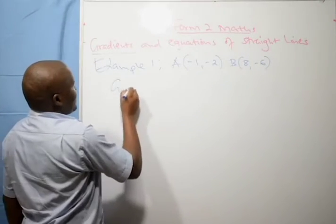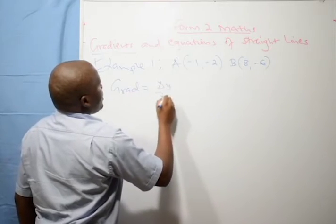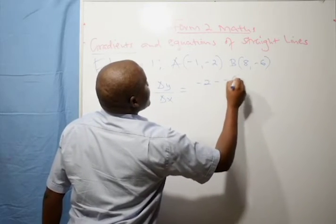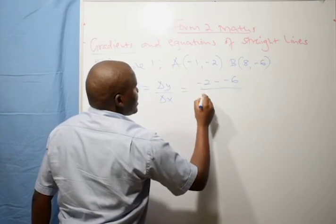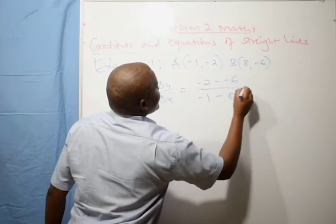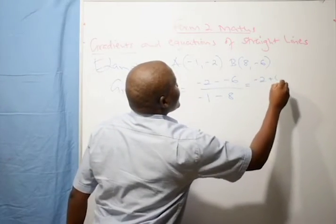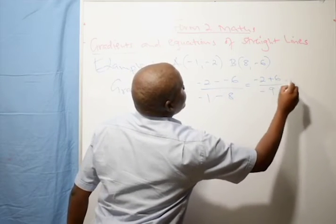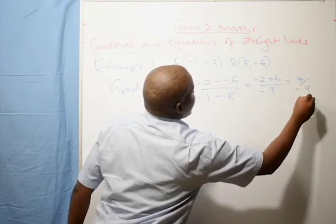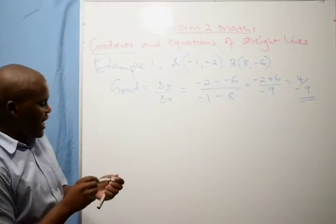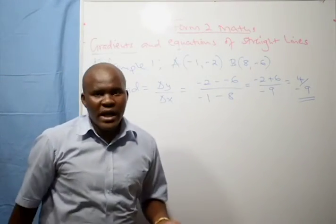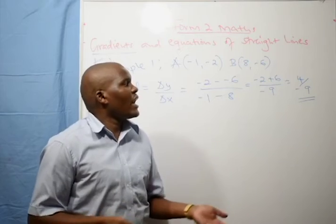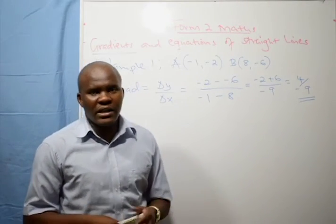Gradient is change in y over change in x. Choosing to start with the first point: negative 2 minus negative 6, all over negative 1 minus 8. From integers, negative 2 plus 6 gives 4, and the denominator is negative 9. So the gradient is 4 over negative 9, which is negative 4/9. That is the gradient of that particular line. When given two points of a straight line, you can find the gradient without necessarily drawing the line on a Cartesian plane.